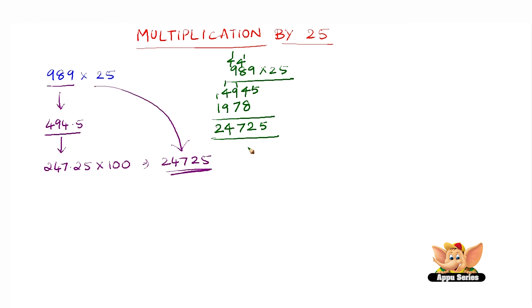Let us quickly do another example as it does not take any time at all. It hardly takes any time. So let us multiply 486 by 25.